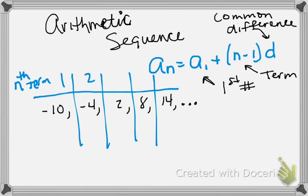So this would be 1, 2, 3, 4, 5. If I asked you what the fifth term was, you would say 14. If I asked you what the second term is, you'd say negative 4. Term is like what place the numbers come in.